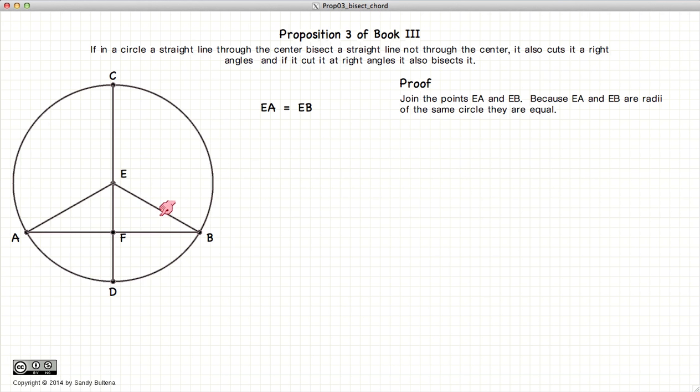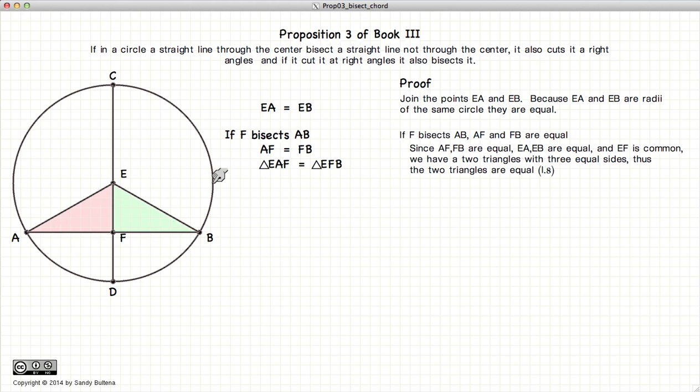Now, starting with the first part of this proposition, let's assume that F bisects AB. So, AF is equal to FB. Now, if we look at these two triangles,